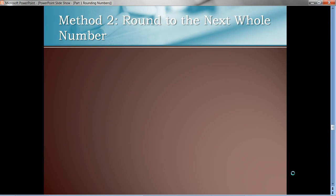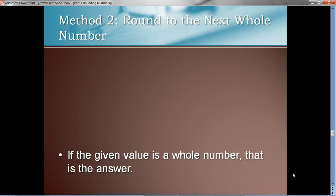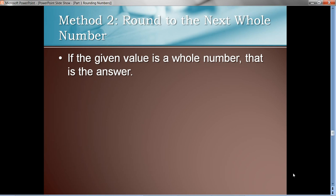Now, the second method is to round to the next whole number. Round up is the way we want to think about it. So, if the given value is a whole number, that's the answer. So, if we compute something and it ends up being a whole number, that's our answer. We don't have to do anything else.